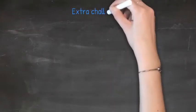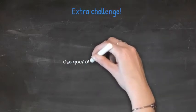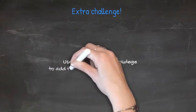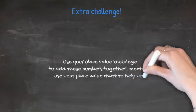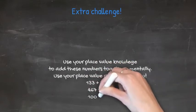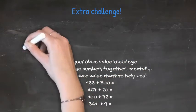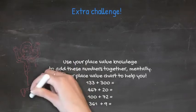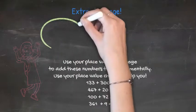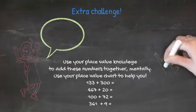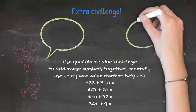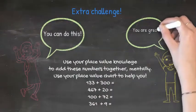Okay. We think you are ready for the ultimate extra challenge. We would like you to use your place value knowledge to add the following numbers together mentally. Of course, you may use your place value chart to help you if needed. You can do this. And believe us, you are great at maths. If you would like to pause the video as you calculate the following, of course, feel free to do so. We will then talk you through each of the following equations.